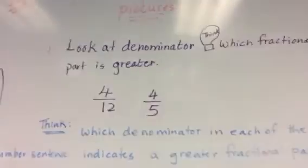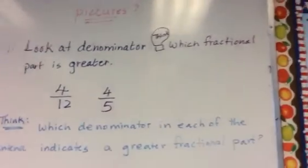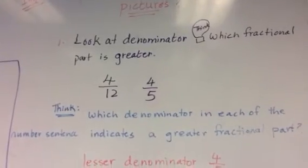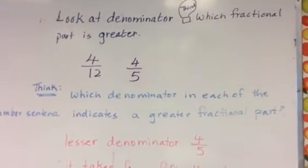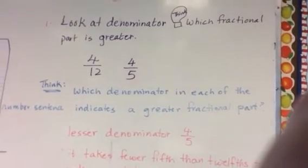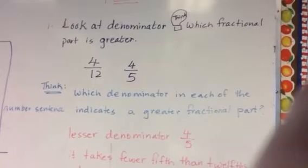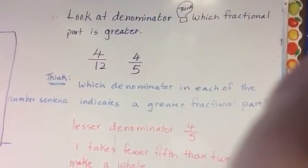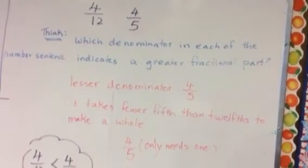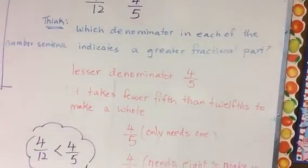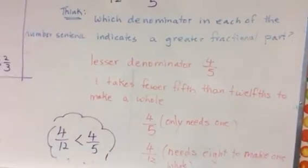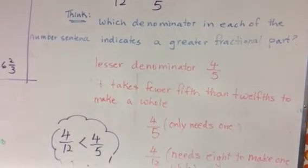Answer, which denominator in each of the number sentence indicates a greater fractional part? The lesser denominator, four fifths shows, indicates a greater fractional part than four twelfths. It takes fewer fifths than twelfths to make a whole. Four fifths only needs one to make a whole. Four twelfths needs eight. So, which is bigger? Four fifths is bigger. So, think again,